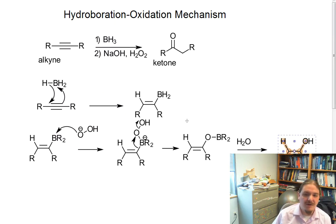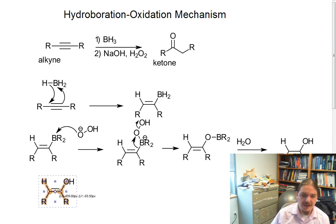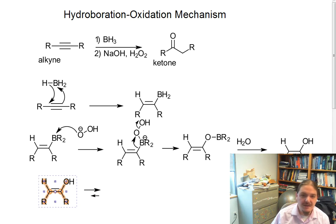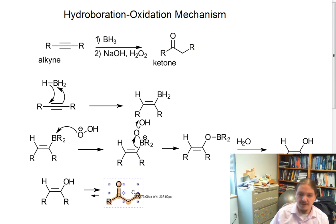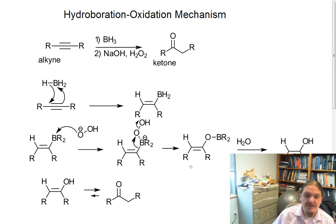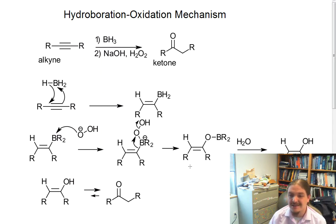Now we have our enol tautomer. And again, as with all hydrations of alkynes, the enol tautomer is in equilibrium with the ketone. That's the mechanism of this reaction for alkynes — the hydroboration oxidation of alkynes.